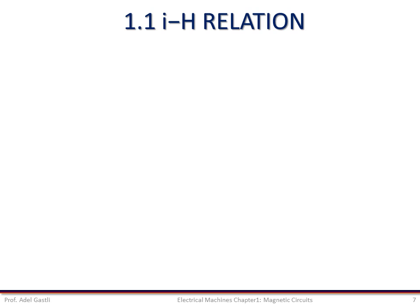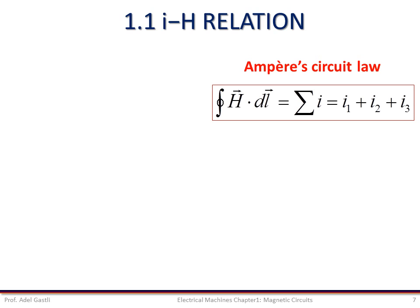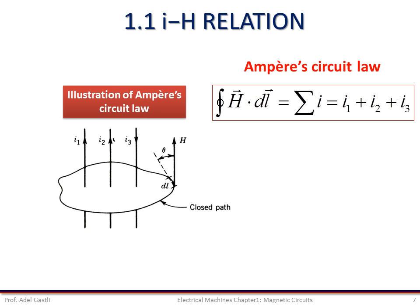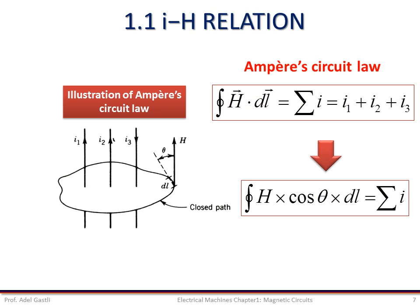The relationship between current and field intensity can be obtained using Ampere's circuit law. This law states that the line integral of the magnetic field intensity H around a closed path is equal to the total current linked by the contour. The integration of H around the closed path can be expressed as shown in this equation, and is equal to the sum of all currents inside the contour. The angle theta is the angle between the field vector and the tangent to the contour at a certain portion dl, so the projection of H on the tangent gives H multiplied by cosine theta.